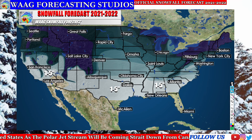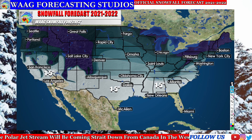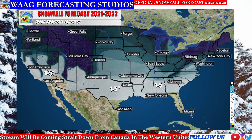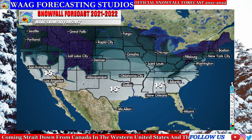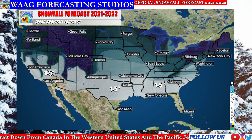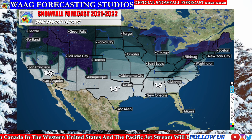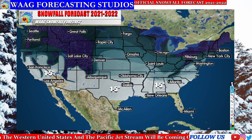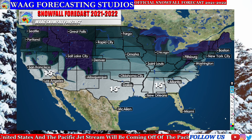Now we're going to be getting into the more interesting maps. This is our final map showing how much total snowfall you can expect over the entire course of the winter — not all at once, but throughout the entire snowfall season, starting now all the way to about May.